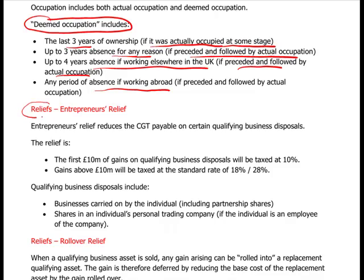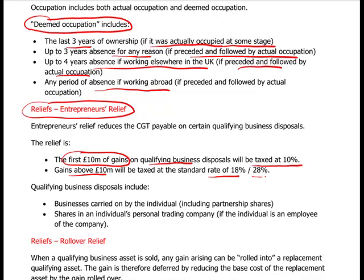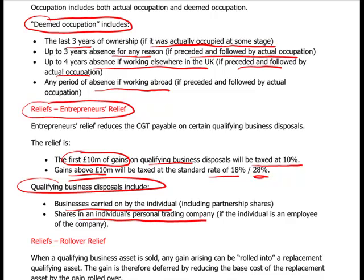Entrepreneurs' relief encourages investment in UK businesses. Entrepreneurs are allowed a lifetime relief of up to £10 million of gains made in a qualifying business, taxed at only 10% rather than 18% or 28%. Gains above £10 million are taxed at the standard rate of 18% or 28%. A qualifying business must be carried on by the individual themselves and can include partnership shares or shares in an individual's personal trading company — not an investment company.